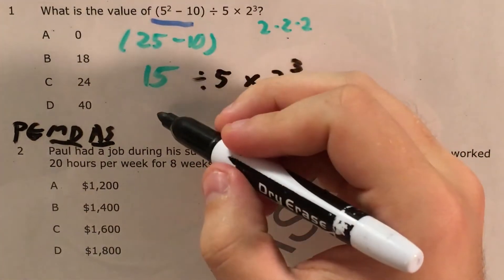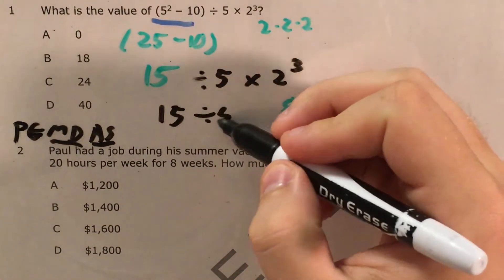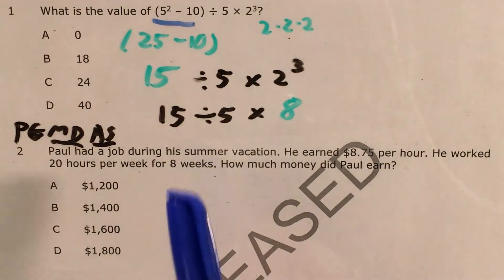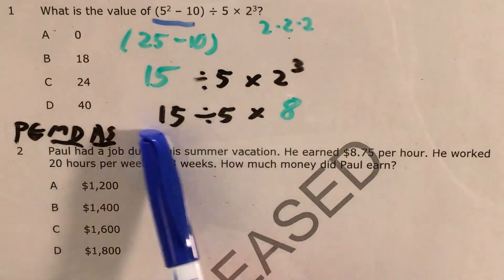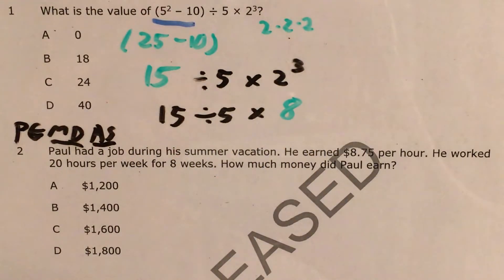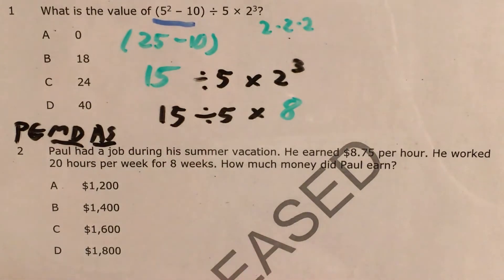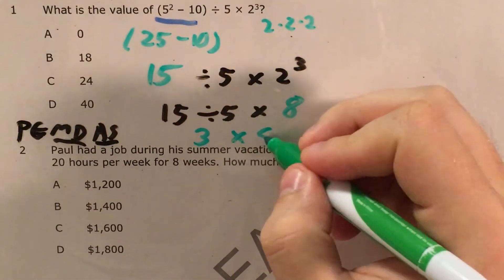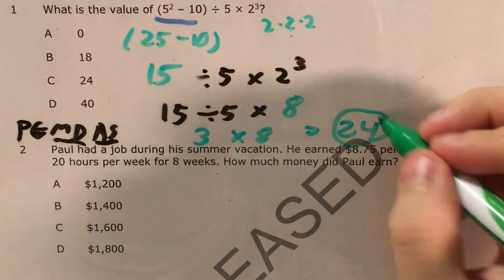Now that I've gotten rid of that exponent, my expression says 15 divided by 5 times 8. Now that all I have are multiplying and dividing, I can just go ahead and divide and multiply from left to right. So I start with 15 divided by 5. 15 divided by 5 is 3, and 3 times 8 equals 24.